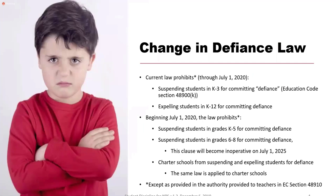There was a change in the defiance law, and this pertains to any student that attends a non-public, non-sectarian certified school. The current law prohibits LEAs from suspending any student in grade K through 3 solely for committing an Ed Code violation of defiance or disruption. You cannot expel kids in any grade K through 12 solely for defiance and disruption. Beginning July 1st, 2020, that law is expanded to grades K through 8, and it is also applicable to charter schools.